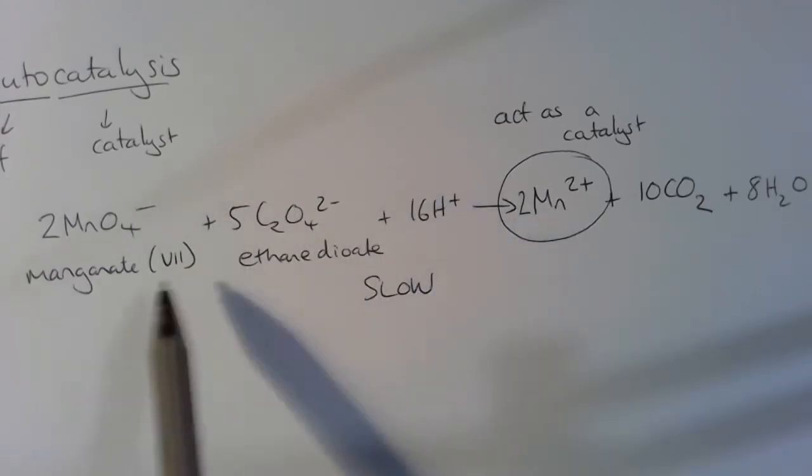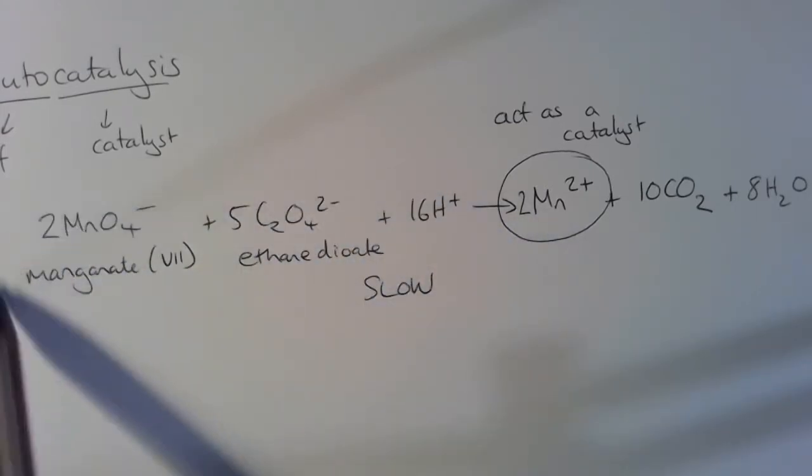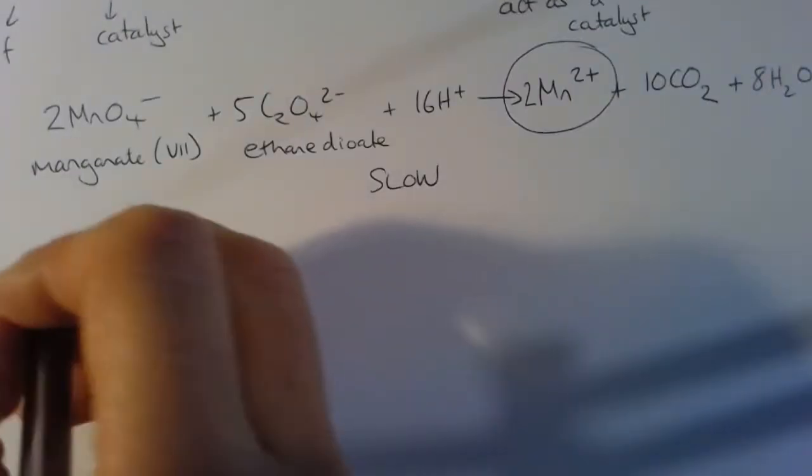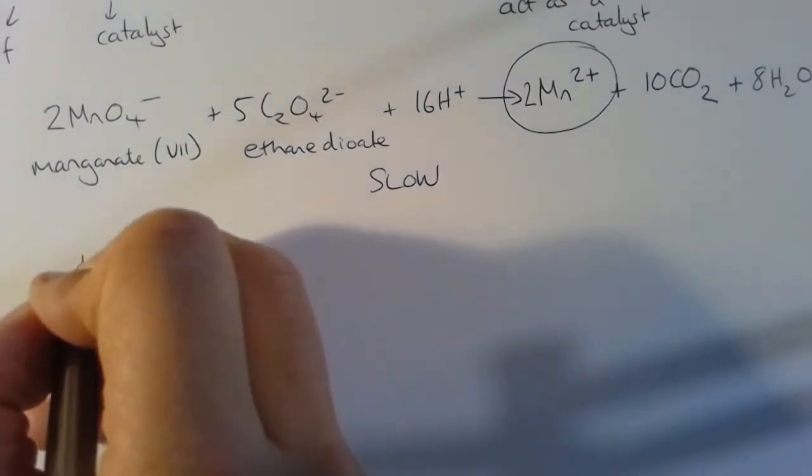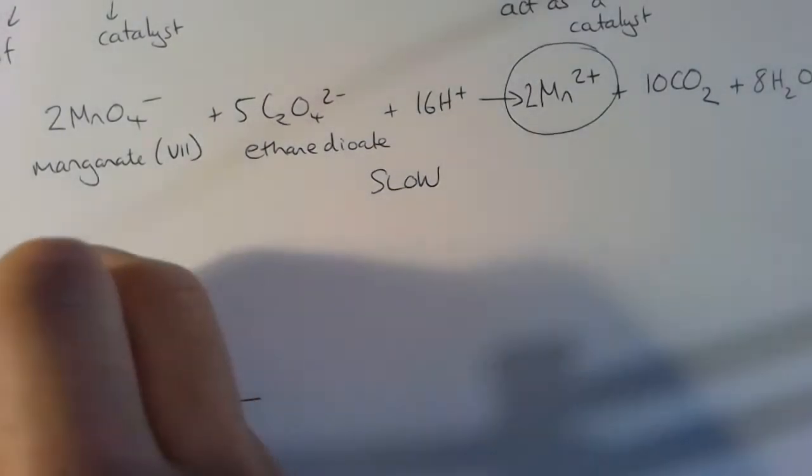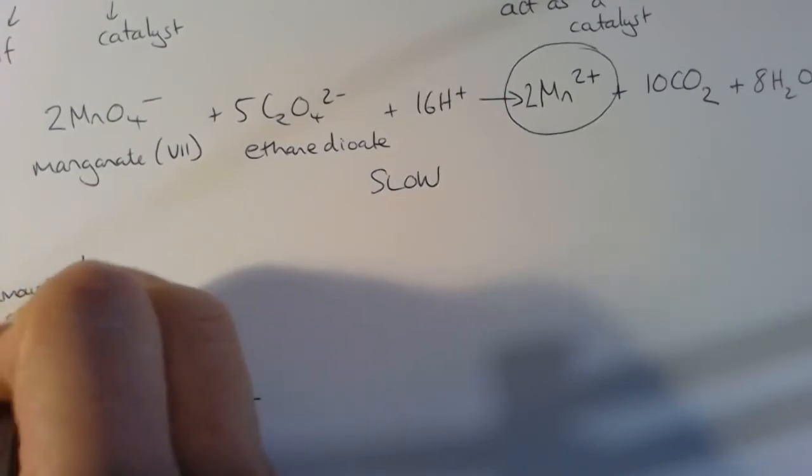Manganese 2+ ions can catalyze this reaction. We know this because if we were to actually add manganese 2+ ions at the beginning of the reaction, we would see that the reaction is significantly faster. But let's think about how it's autocatalyzed. As I said, this reaction is slow to start with, but let's think about a reaction that isn't slow.